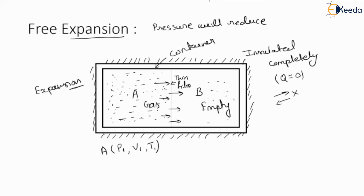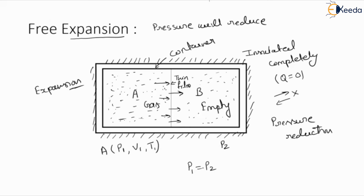During this expansion process, the gas will try to fill the complete evacuated space of B, and we will observe pressure reduction. Suppose pressure at side A is p1 and pressure at side B is p2. At one moment, p1 will become equal to p2, and that is the condition of stability. After that condition, the gas will not move back to its initial condition — side B will not become empty again, and side A will not get filled as before. This condition is represented as irreversible.